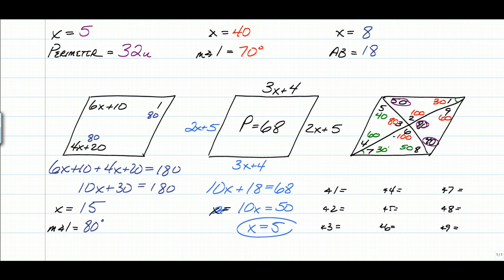So angle 1 is 30, angle 2 is 100, angle 3 is 80, angle 4 was 60, angle 5 is 40, angle 6 is 100, angle 7 is 30, angle 8 is 50, and angle 9 is 60. And if you got all of those right, pat yourself on the back. That's a good job.